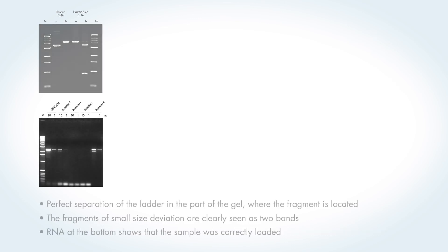The lower example shows a ladder that's not perfectly separated for larger fragments, but it works very well for the bands of interest. The double band is clearly seen as two bands, albeit with very small size deviation. The RNA bands on the lower end of the gel show that the samples were correctly loaded.